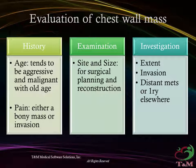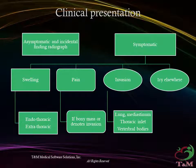Clinical presentation includes incidental finding on radiography or symptomatic presentation with swelling, which may be intrathoracic or extrathoracic, and pain. If pain is present, it denotes either a bone mass or invasion. Local invasion to the lung, mediastinum, thoracic inlet, or vertebral bodies may occur. Symptoms of a primary tumor such as thyroid, breast, lung, abdominal viscera, or prostate should also be considered.